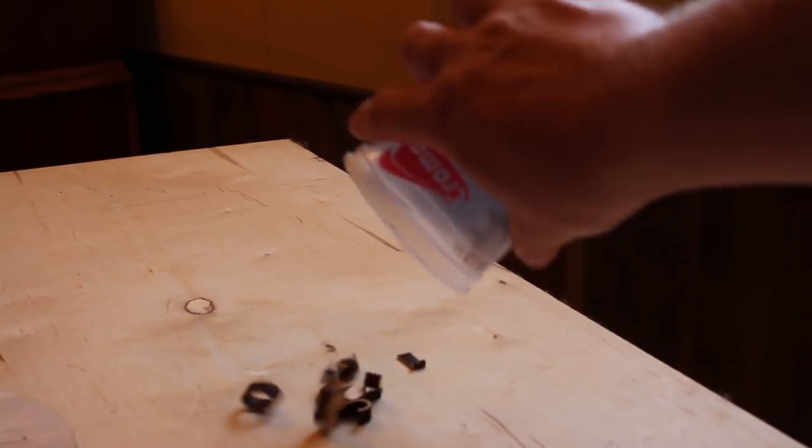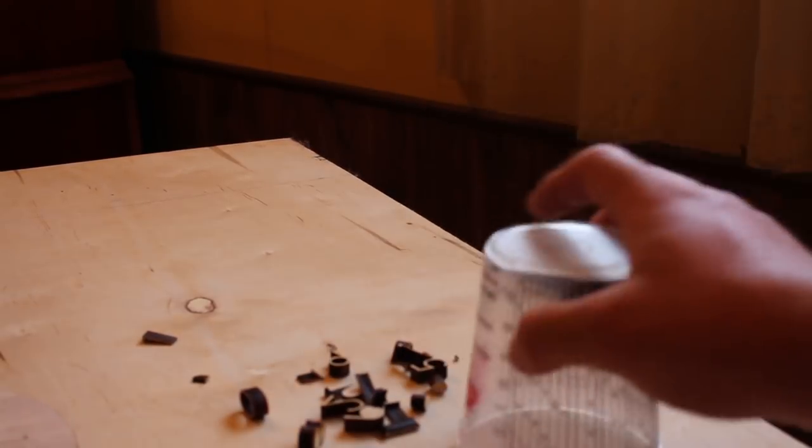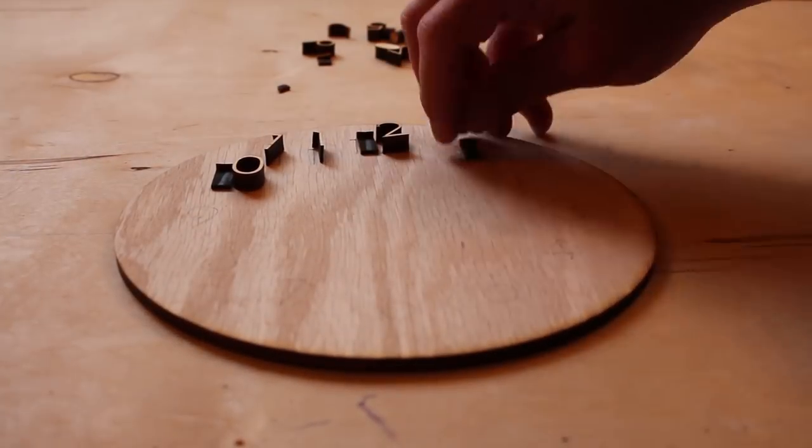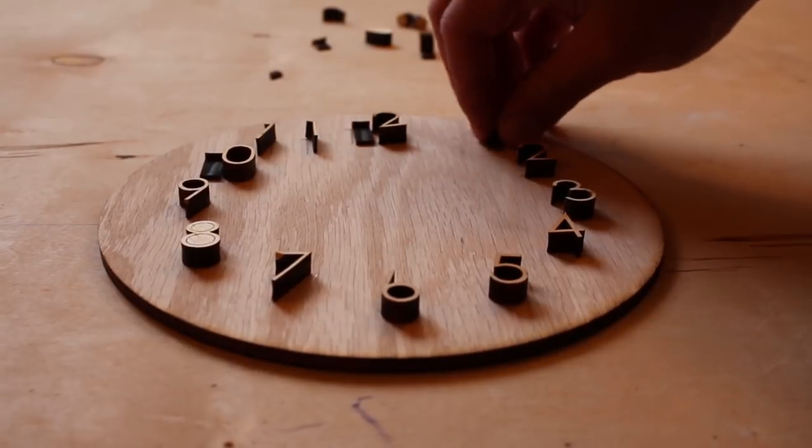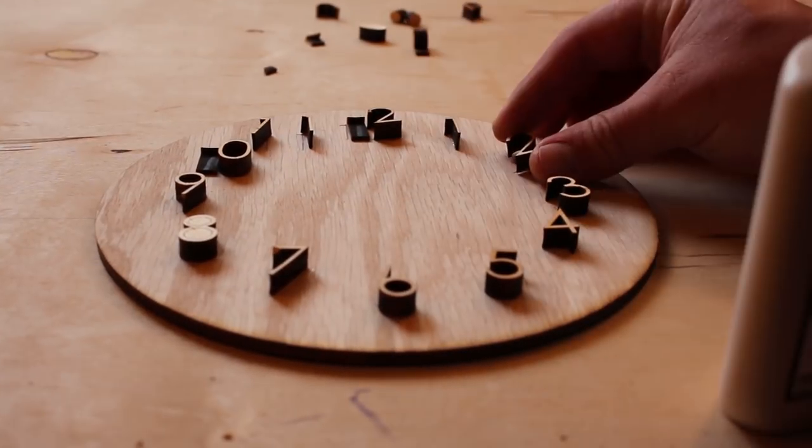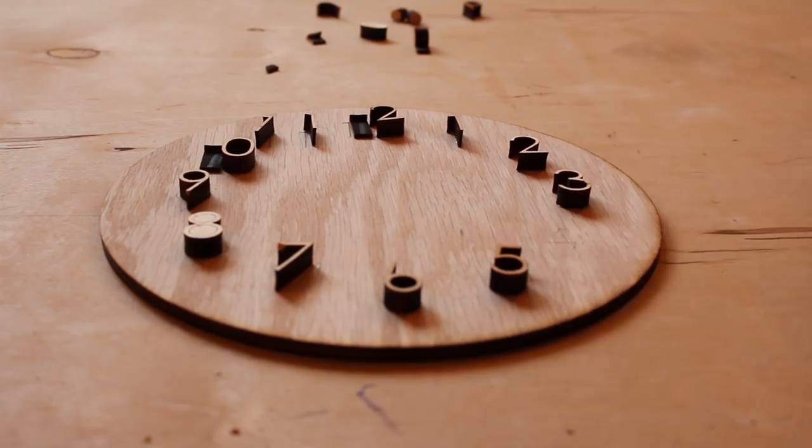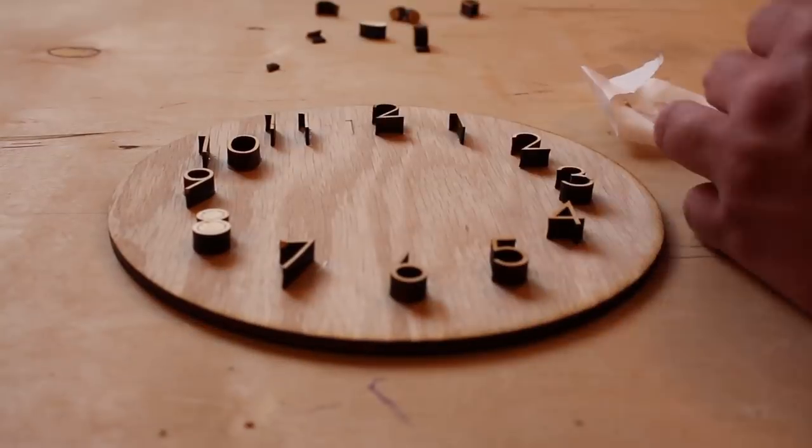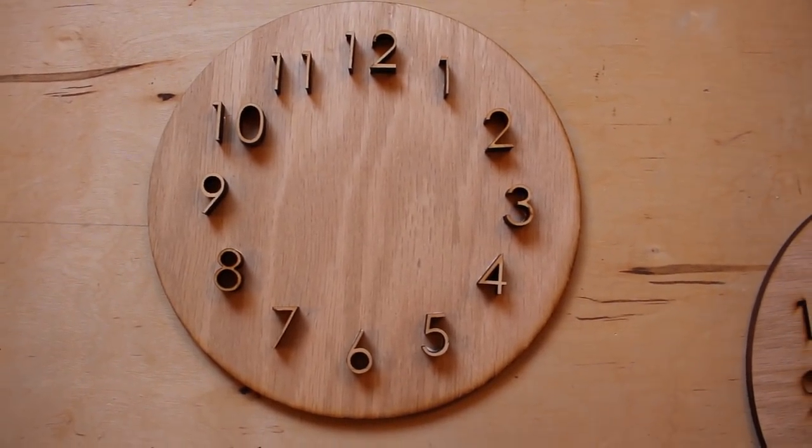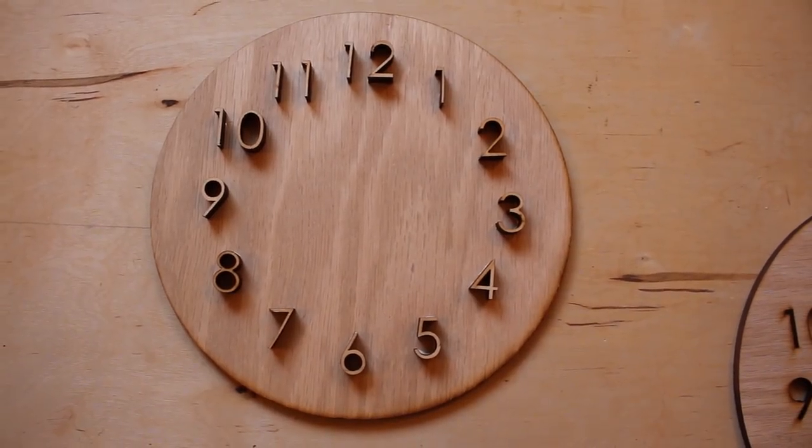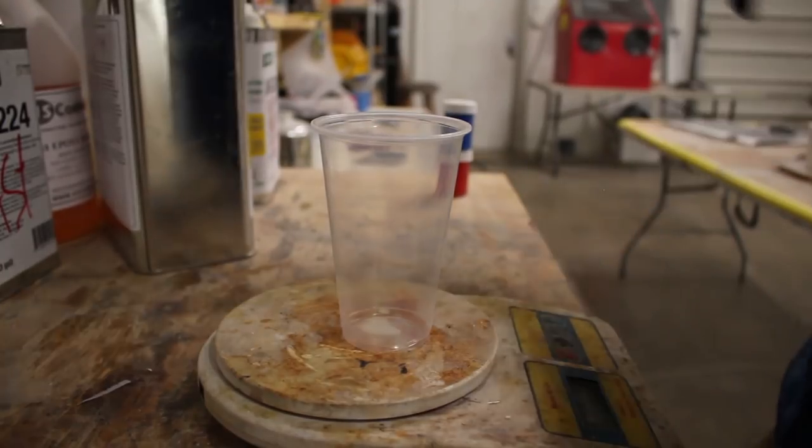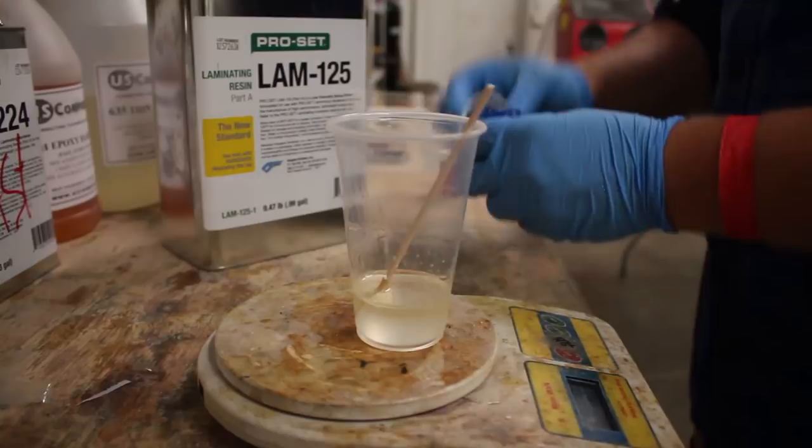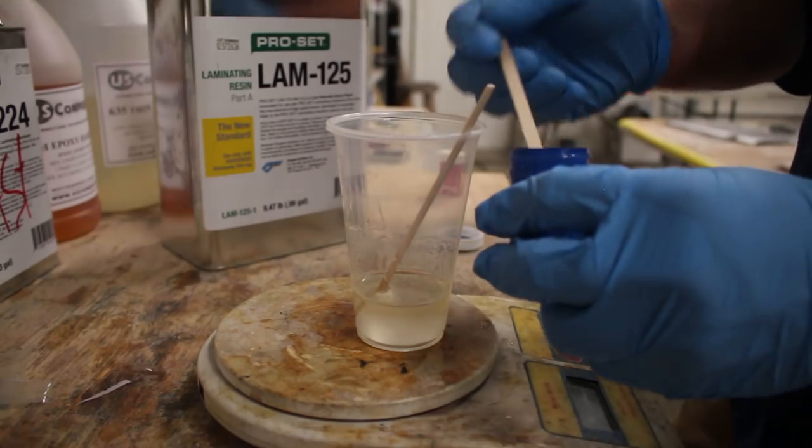I saved the cutouts from the other clock. That turned out really nice. Now I just have to drill the hole and make sure that the clock hands aren't going to hit the numbers. Add some epoxy for the first clock and a little bit of pigment for color.